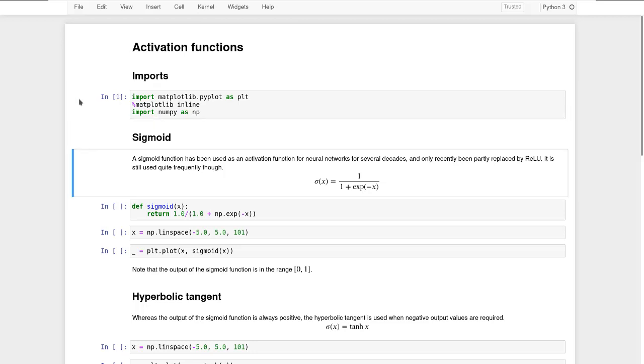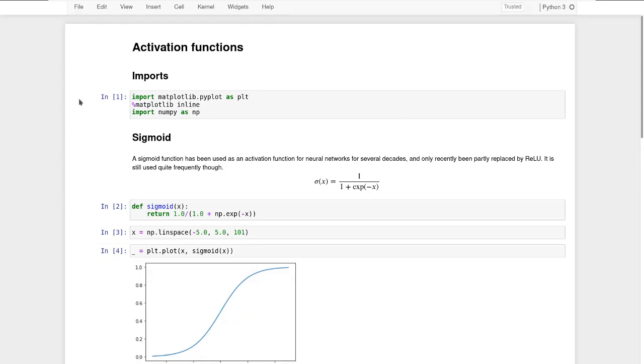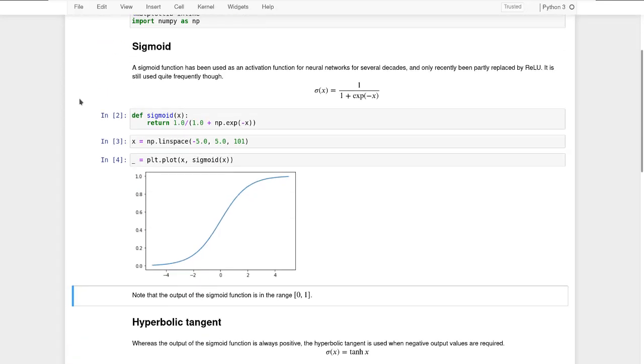One of the most common activation functions, especially in older literature, is the sigmoid function. So essentially, it's just 1 over 1 plus e to the power minus x. And this is a function that has the value 0 for negative numbers, which is 1 half for 0, and which is 1 for large positive values. So if we define the function and we compute the domain from minus 5 to 5, 101 points using linspace, then we can plot that function. And as you can see, it has the behavior as specified.